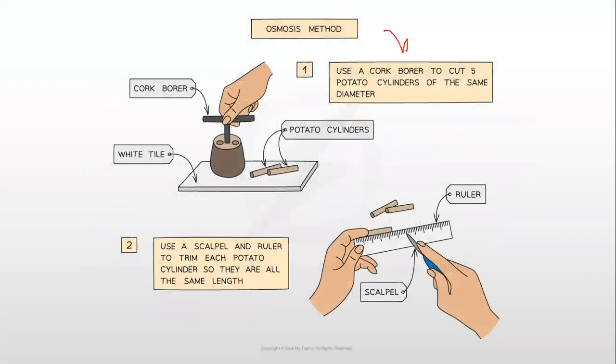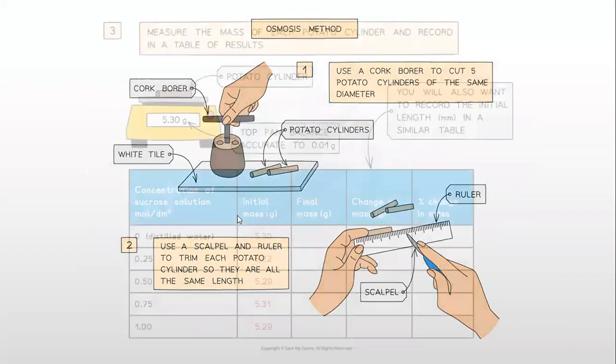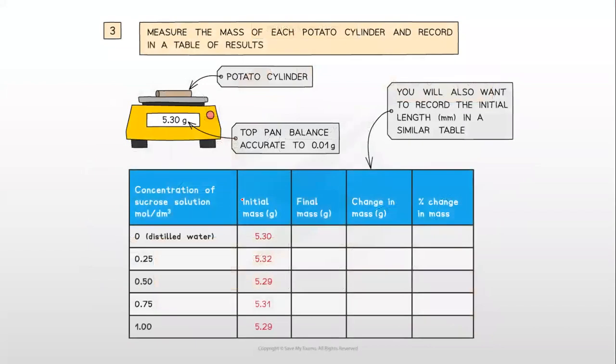Use a cork borer to cut 5 potato cylinders of the same diameter. Then use a scalpel and a ruler to trim each potato cylinder so they are all the same length. Then measure the mass of each potato cylinder and record it in a table of results.